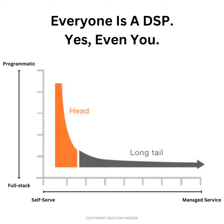You can quickly see that DSPs exist on two spectrums. The first spectrum is self-serve versus managed service. The second spectrum is digital programmatic exclusive buying or full-stack out-of-home — traditional buying, programmatic, all things out-of-home. You can think about these two as coexisting on an XY axis. What this means is that out-of-home specialists are DSPs as well — classified as a managed service, full-stack DSP.